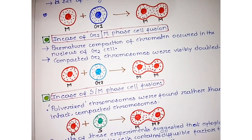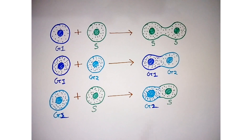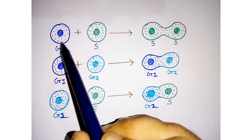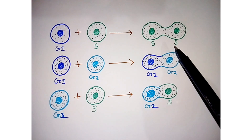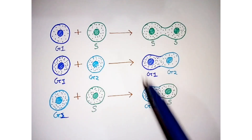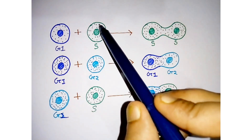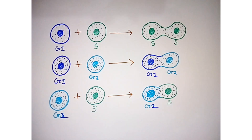When we fused a G1 phase cell with an S phase cell, we get transformation of G1 to S phase — resulting in two S phase cells. There are some diffusible or regulatory elements present in S phase cells that help in the transformation of G1 into S phase.